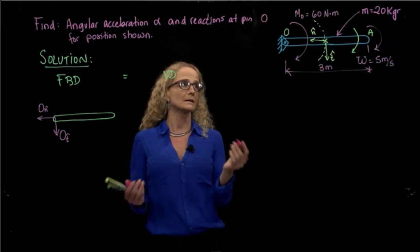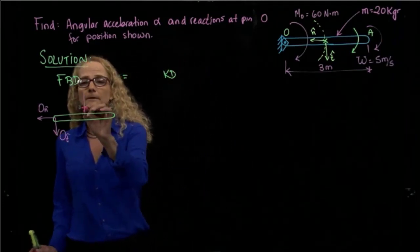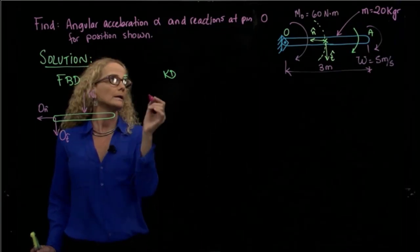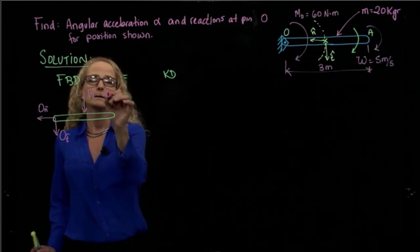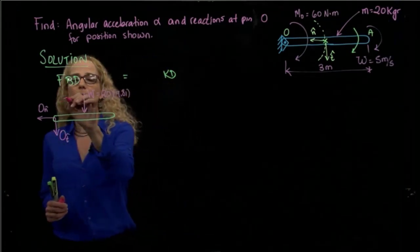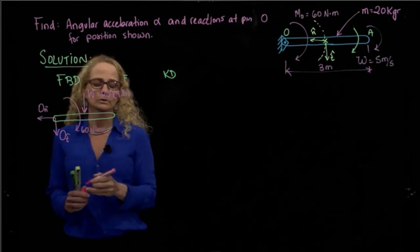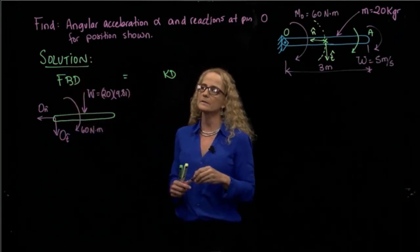And then the other force, external force that is acting in my rod, is the weight. The weight is 20 times the gravity, and then we have an external moment, 60 newtons meters. So that's my free body diagram of the system.